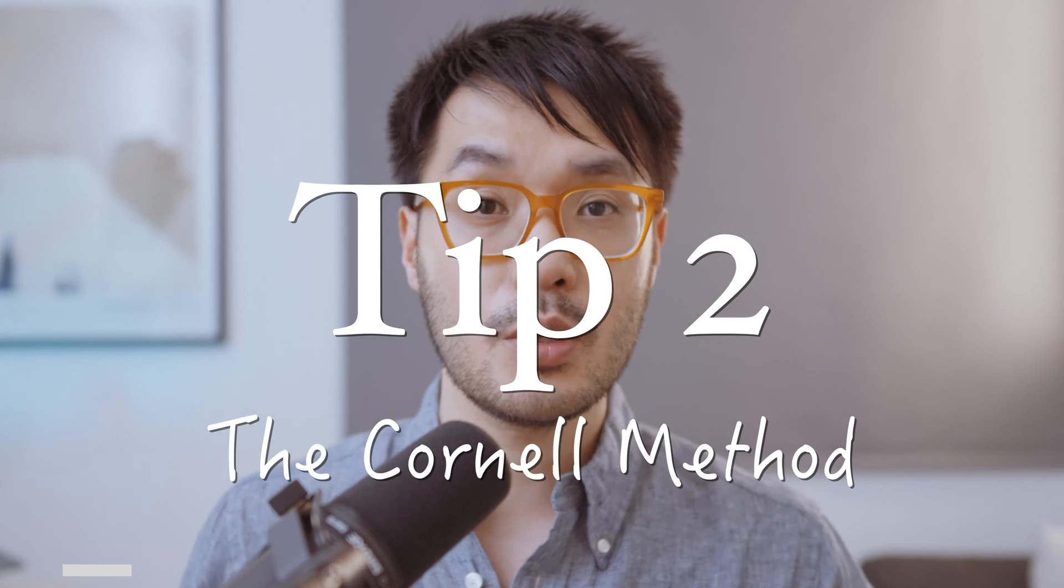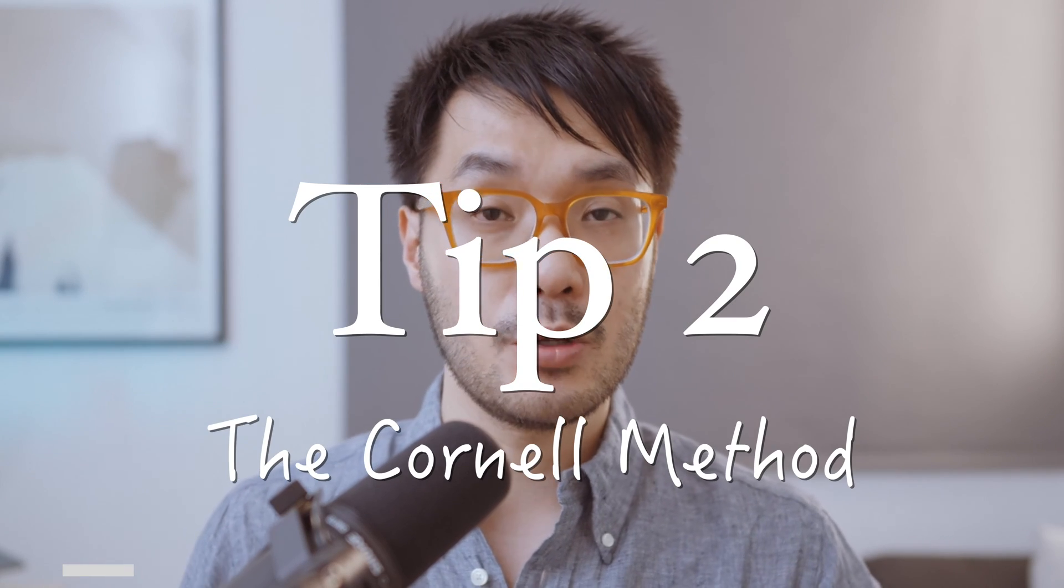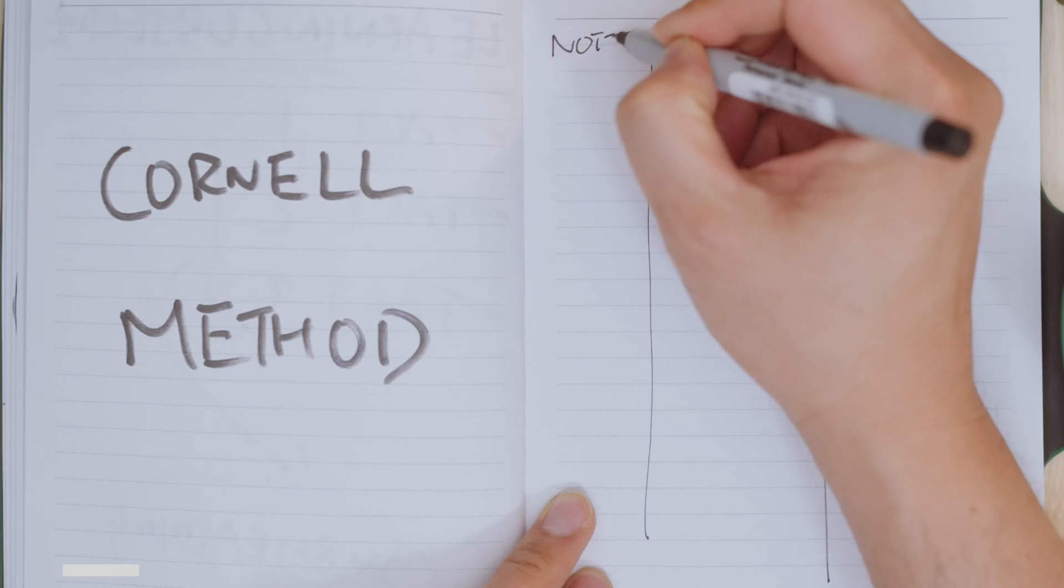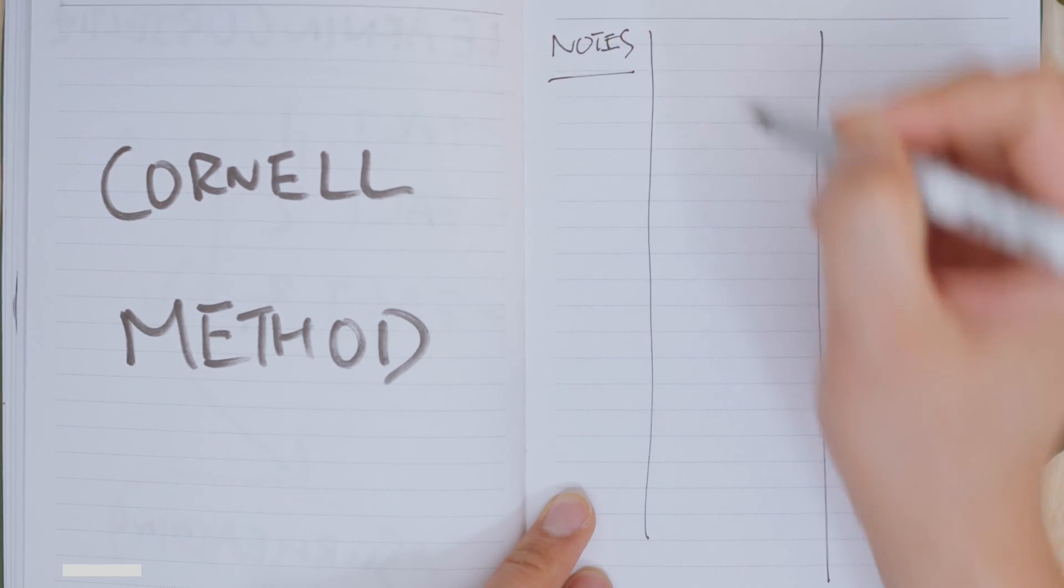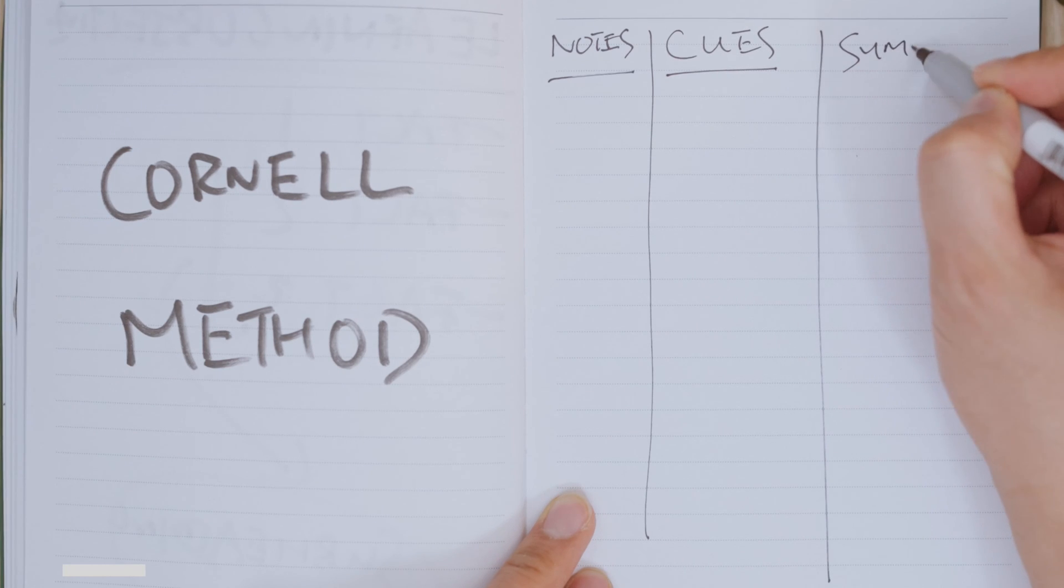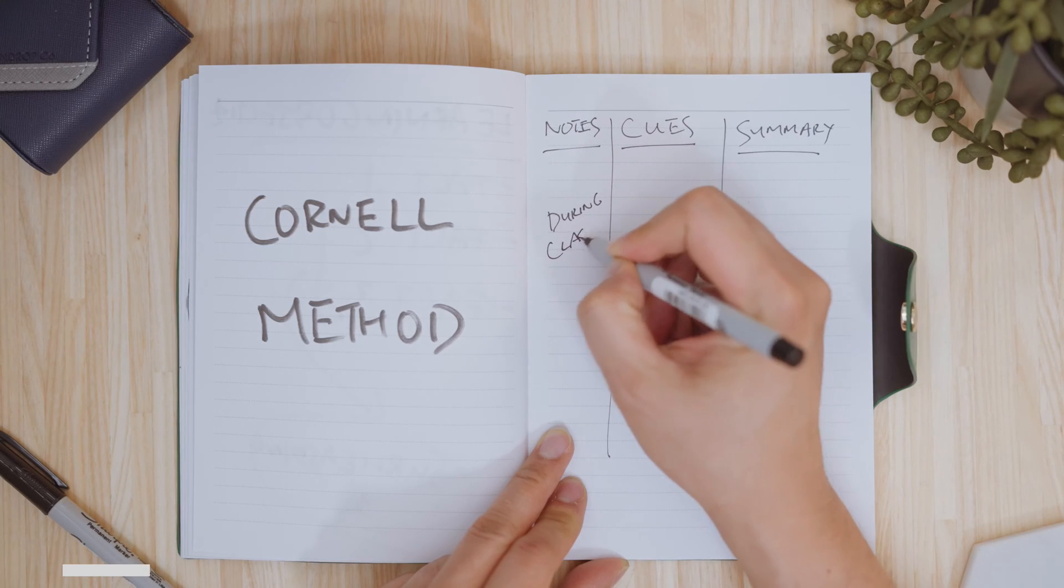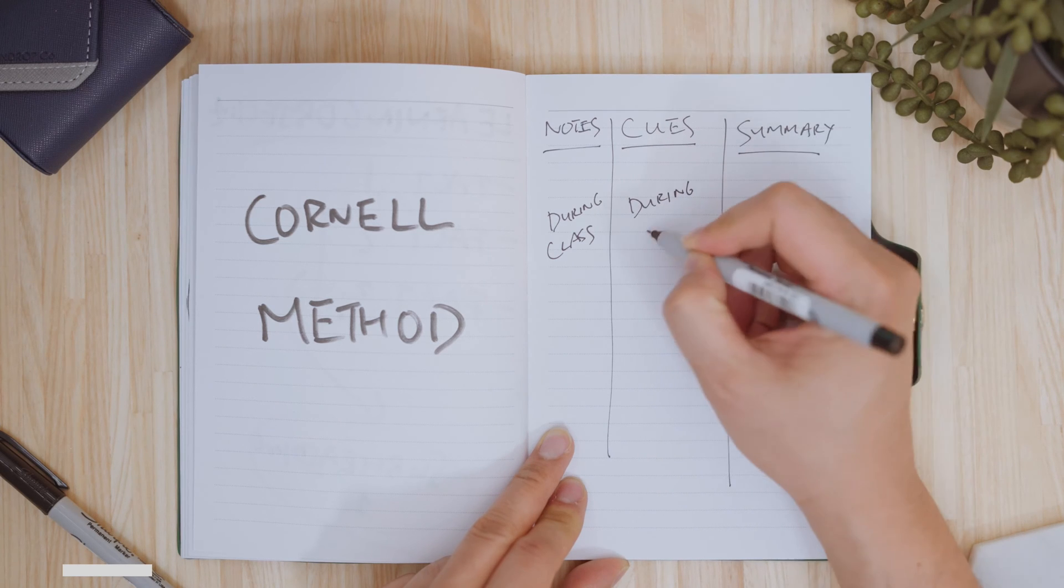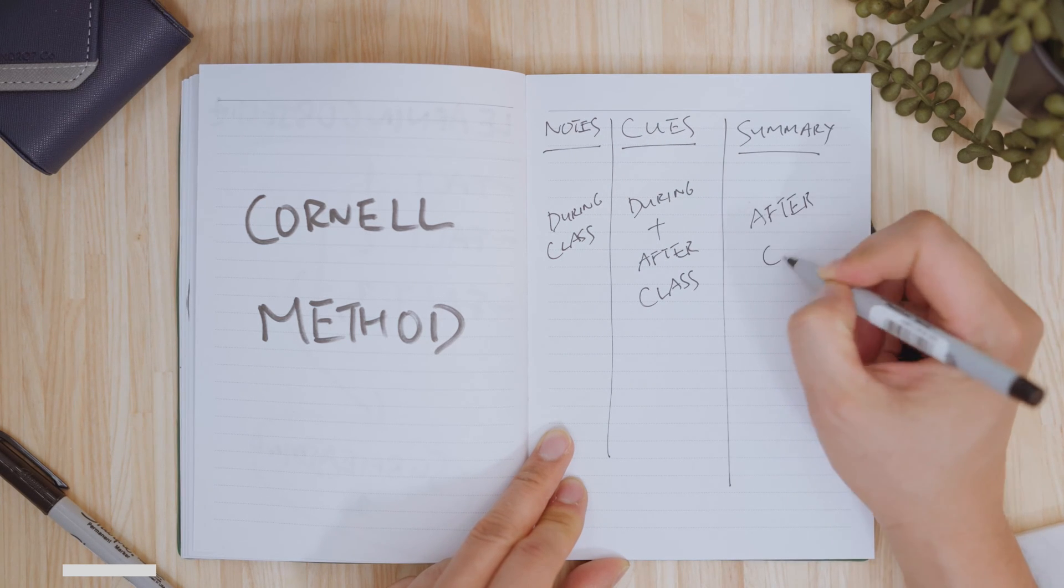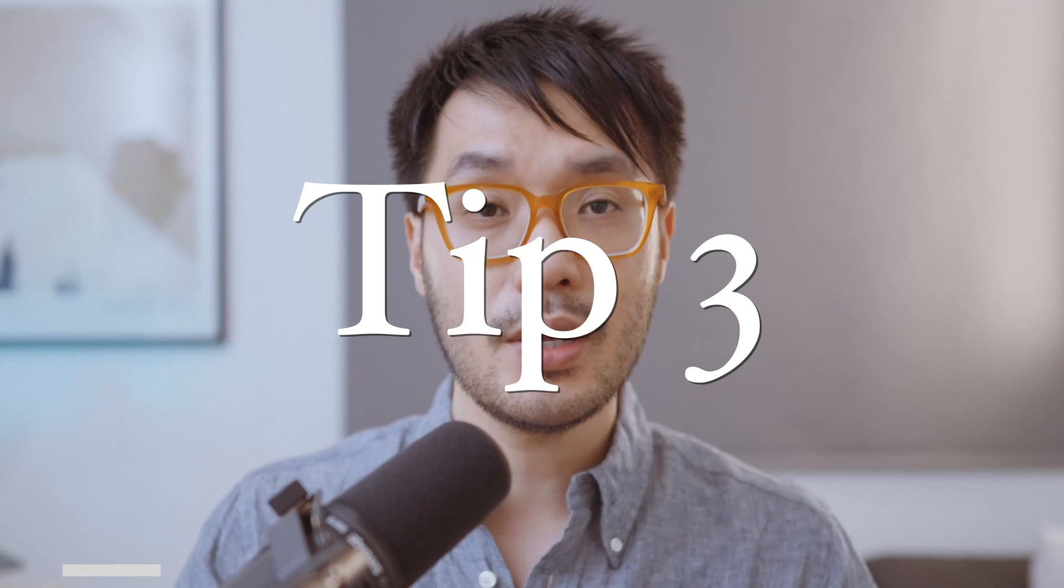Tip two: the Cornell method, which makes your interrogation of the information more explicit. Divide your page into three columns: notes—important ideas mentioned during class; cues—questions you may have from the material; and summary—your distillation of the overall objective of that class. These three columns reinforce the idea that note-taking is not a one-and-done activity.